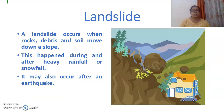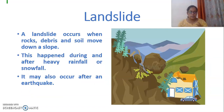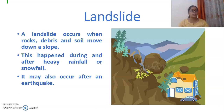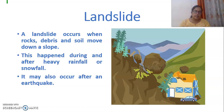Landslide — many of you have asked, what is a landslide? As you can see from the picture, whenever a landslide occurs, the soil and rocks come down the slope. This happens because of heavy rainfall or snowfall, and it can even happen after an earthquake.